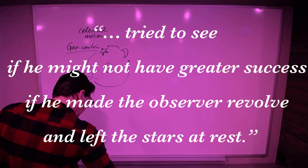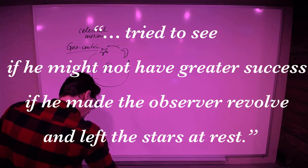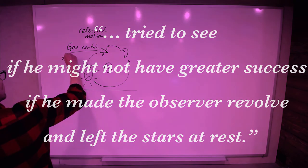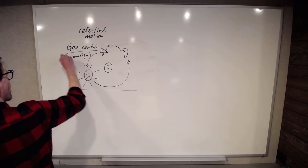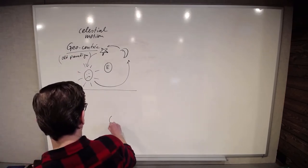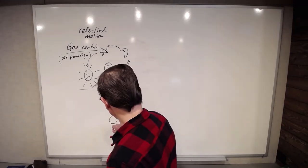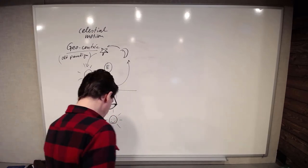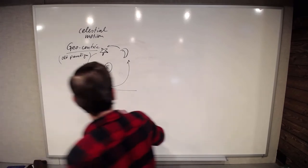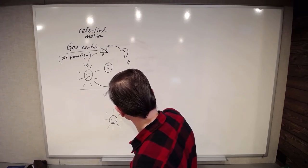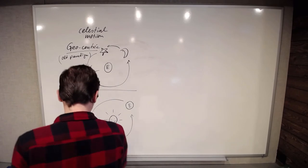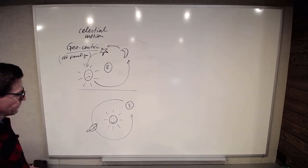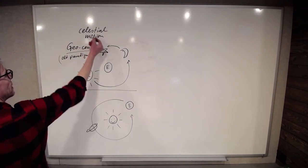He tried to see if he might not have greater success if he made the observer revolve and left the stars at rest. So the star in this case is the sun. So this is the old paradigm. So what Copernicus did, he put the star, the sun, in the center and made the observer revolve around it. So now earth is out here orbiting the sun. Earth and a bunch of other things as well. That's how you make progress in the explanation of celestial motion.